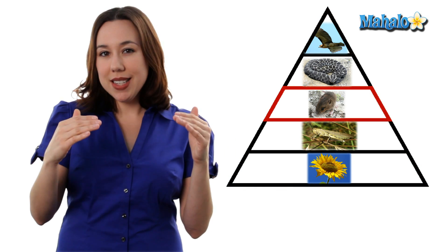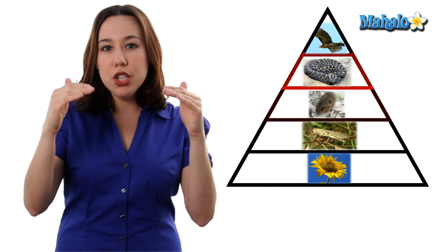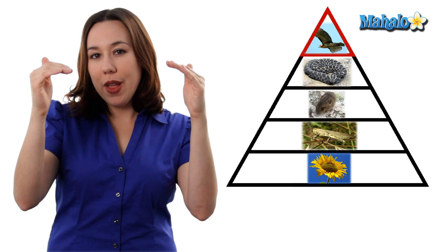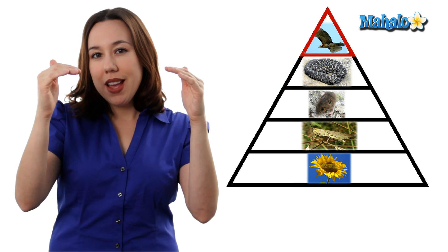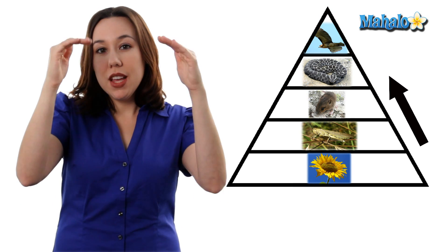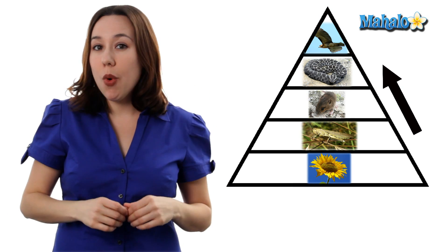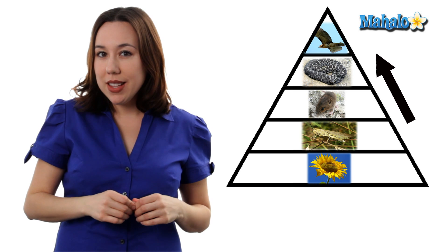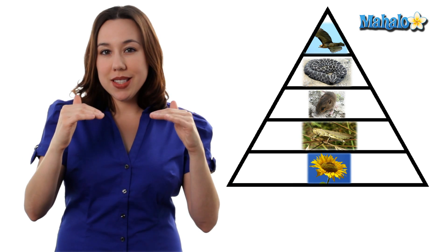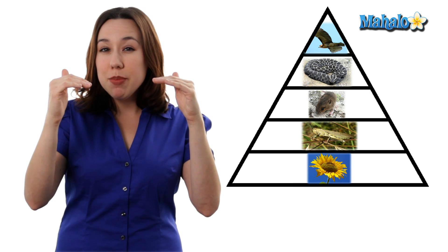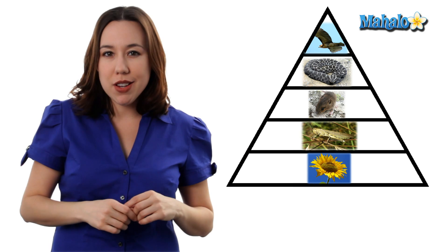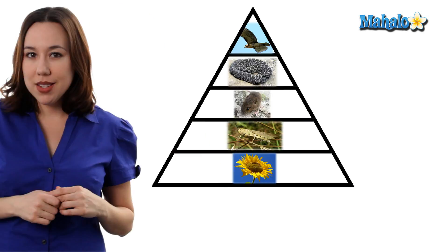We also have secondary, tertiary, and our quaternary or fourth level consumers. As you go up the food chain, you start to lose more and more energy. In fact, each trophic level that you increase, you lose 90% of the energy originally harnessed from the sun.